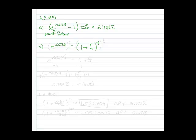To solve for R, the first thing we'll do is we'll raise both sides to the 1 fourth. So that gives us e to the .0275 divided by 4 equals 1 plus R over 4.